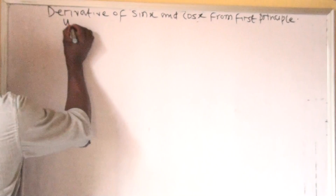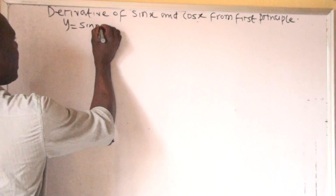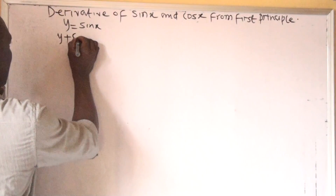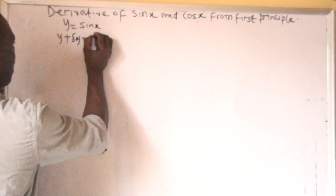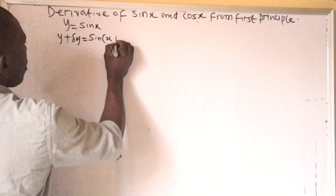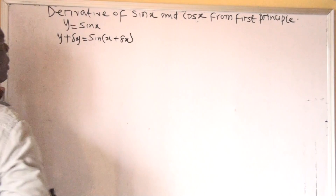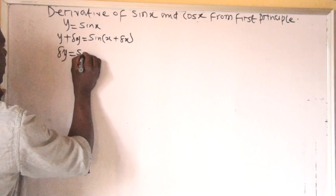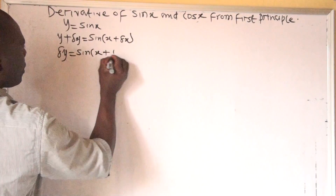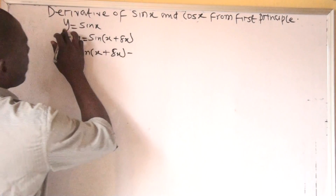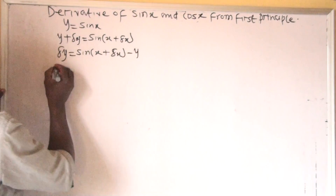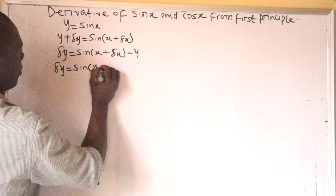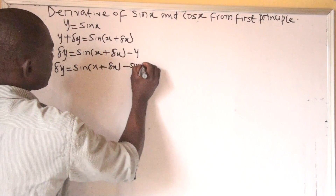We know that if y is equal to sin x, from the first principle, y will become y plus delta y, which equals sin(x plus delta x). We move y to the right-hand side so that delta y equals sin(x plus delta x) minus y, and our y is sin x. So delta y is equal to sin(x plus delta x) minus sin x.